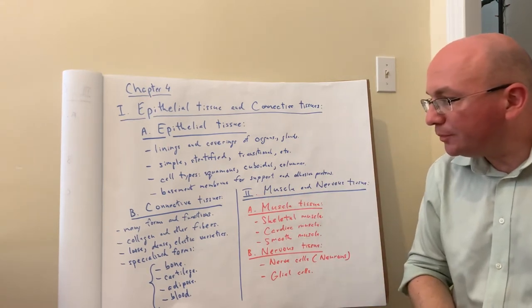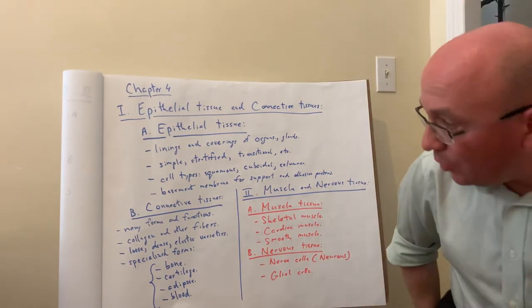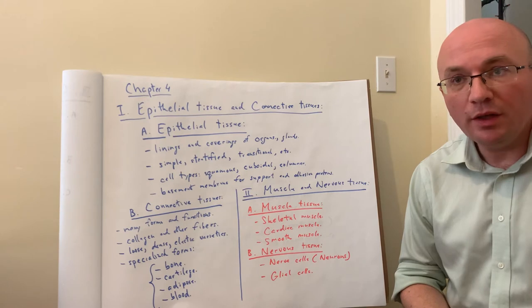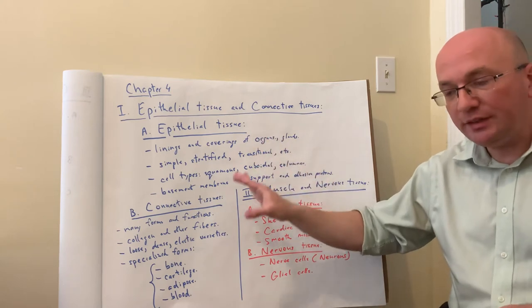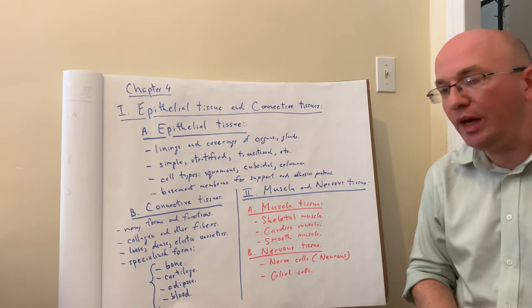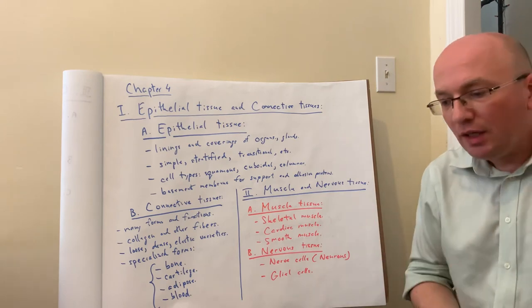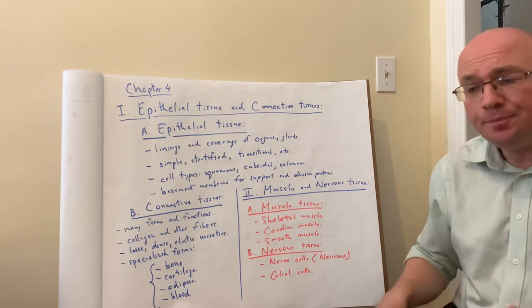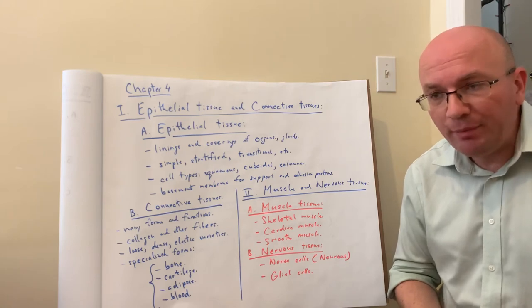For connective tissue, there are many different forms. These are tissues that have fewer cells. Epithelial is all about cells, but with connective tissues, you're thinking more of all kinds of fibers. What kind of proteins do we have? Mostly you're going to see type 1 collagen fibers, sometimes elastic fibers. Collagen is the long protein fibers that provide strength and stability to the organ.